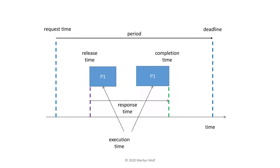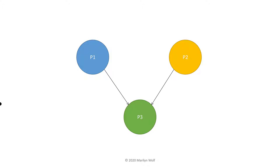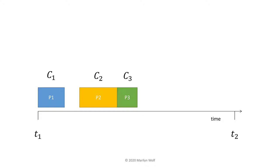Some real-time models allow data dependencies between tasks. In this case, P3 cannot start until both P1 and P2 finish and pass their data on to P3. Generally speaking, the deadline would apply to the entirety of this task graph. All three processes must finish by the deadline.